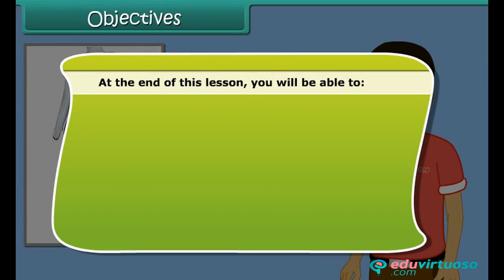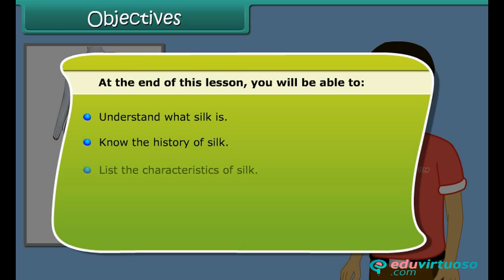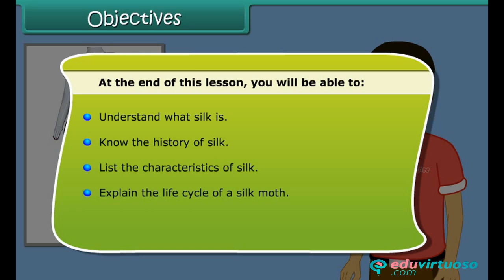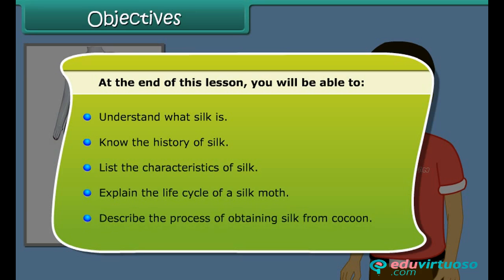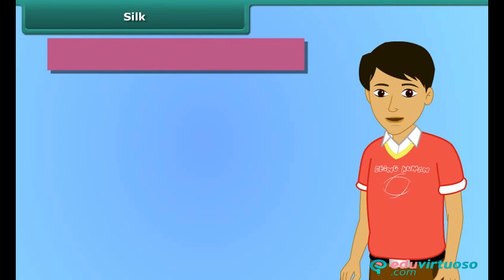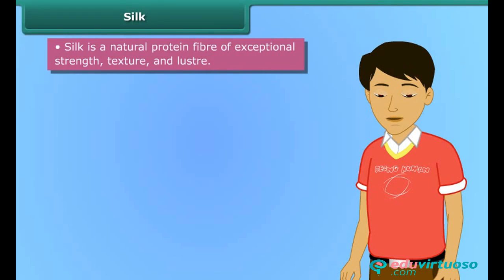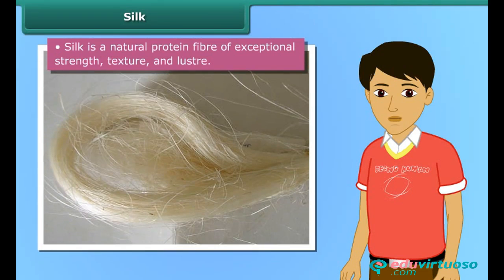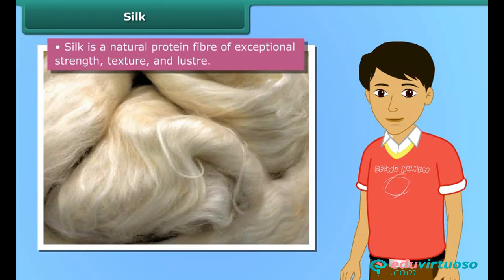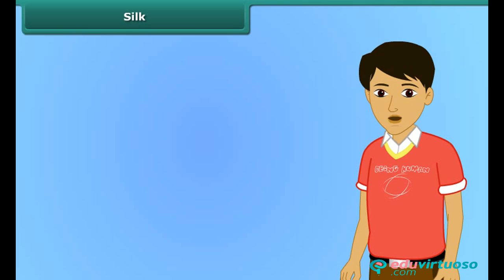At the end of this lesson, you'll be able to understand what silk is, know the history of silk, list the characteristics of silk, explain the life cycle of a silk moth, and describe the process of obtaining silk from cocoons. Silk is a natural protein fiber of exceptional strength, texture, and luster.